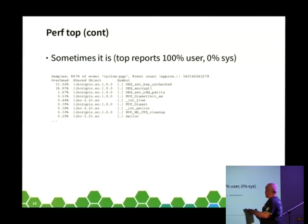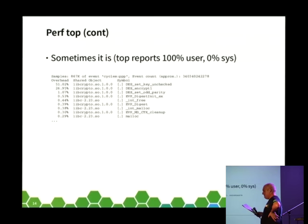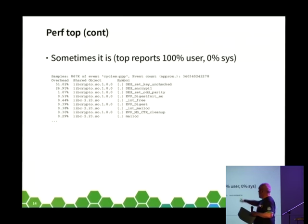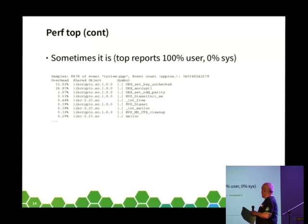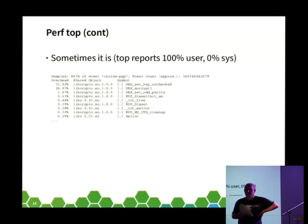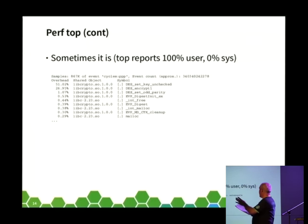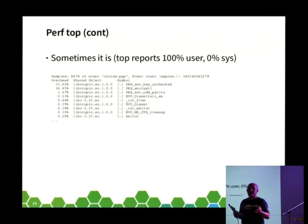However, sometimes it is CPU bound. Running OpenSSL speed showed 51% of the time in one DES function, 26% in another, and so on, with two orders of magnitude more samples per second. It's important to know: if you see high numbers in perf, go back and figure out whether it's actually CPU bound. If you're not CPU bound, you're not going to get very far poking around in perf top.